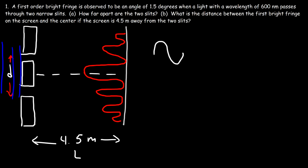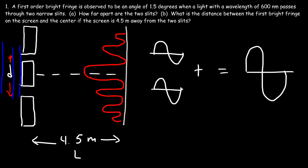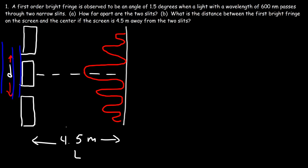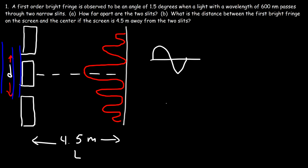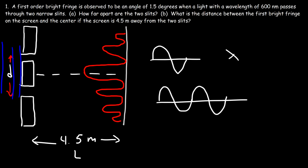Constructive interference occurs when two waves are in phase, so they add up to form a larger wave. Destructive interference occurs when two waves are out of phase, so they cancel out. Two waves are out of phase if their relative positions differ by half a wavelength. However, if two waves are separated by a distance of one full wavelength, they will be in phase with each other.